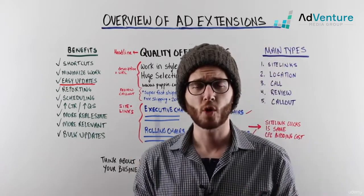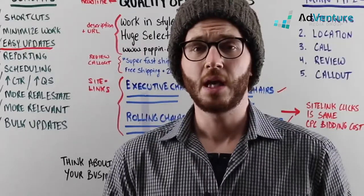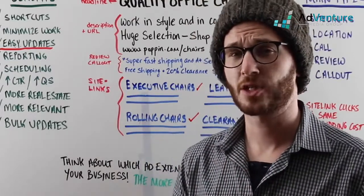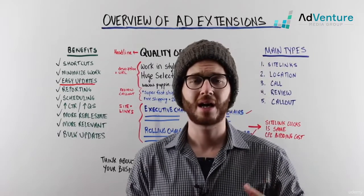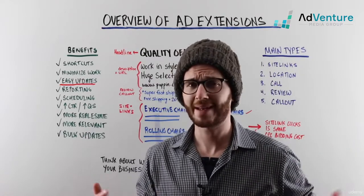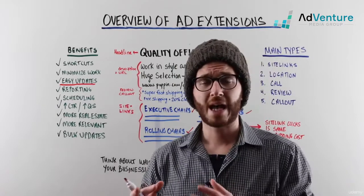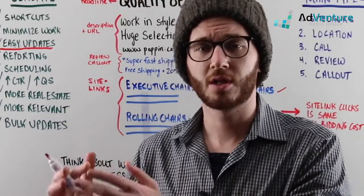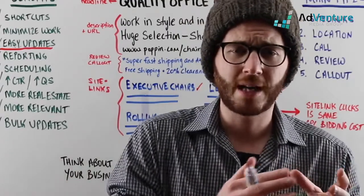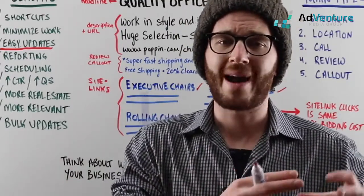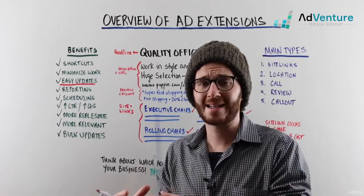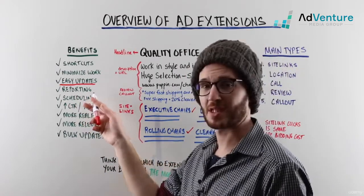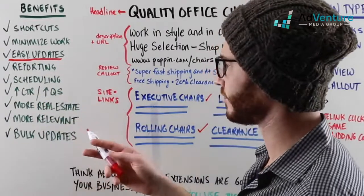Ad extensions also have really cool reporting which we'll look at in a later video. You can see how many clicks a sitelink has received. One of the types of ad extensions is a callout extension — a line of text that allows you to highlight certain services, sales, and specials. You can compare data like clicks, impressions, cost, average cost per click, conversions, converted clicks, and cost per conversion — comparing that data for ads displayed with an ad extension versus ads that were not. So you can get deep into reporting to see how effective your ad extensions have been and optimize accordingly.